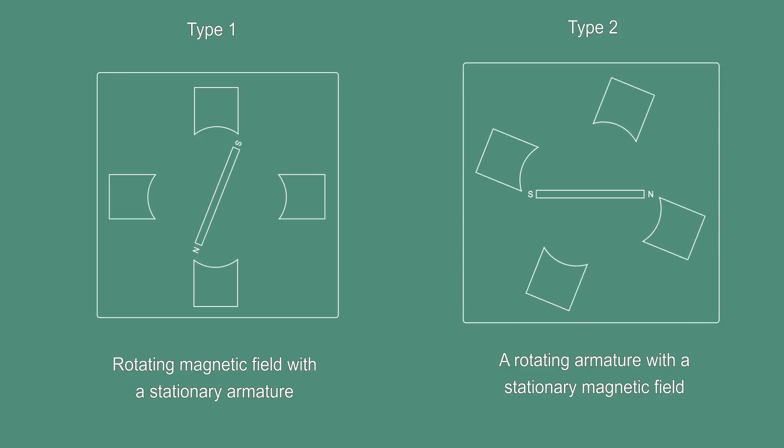Type 1: rotating magnetic field with a stationary armature. Type 2: a rotating armature with a stationary magnetic field.